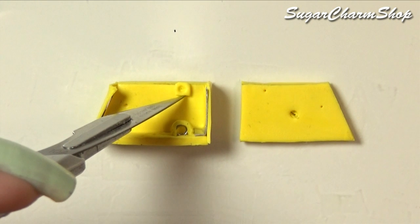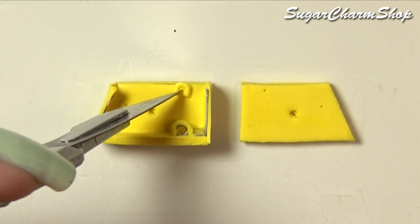Add a small piece of clay to each of the holes at the top, and then poke it with a dotting tool.